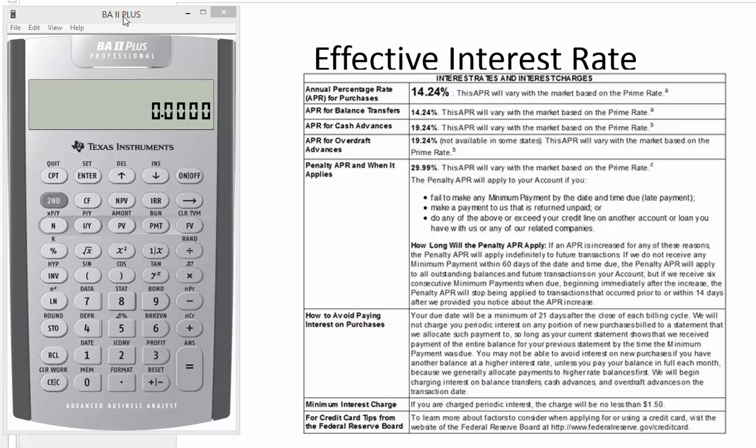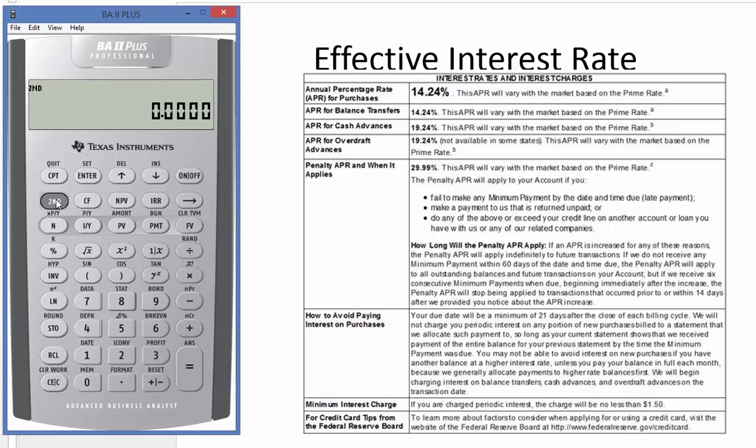With the BA2 Plus calculator, if we want to compare different interest rates, we call this interest rate equivalents. We press second and then we go to number two. Here we will enter the nominal rate, which is the quoted rate. In this case, it's 14.24%, so we put enter.